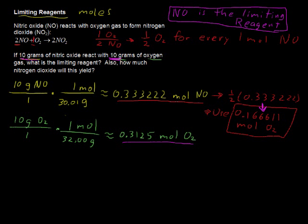Next question is how much nitrogen dioxide will this yield? Well, look at this ratio again. This time we're looking at the ratio of the limiting reagent. We don't care about the other reactant there, O2 gas, because we're not using all of it. We're using all of the NO. So we look at the ratio of the NO to the yield NO2 and it's a one-to-one ratio.